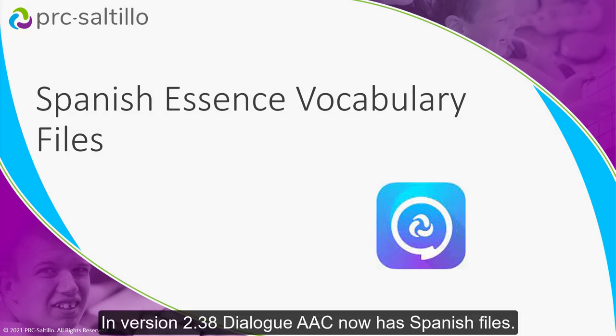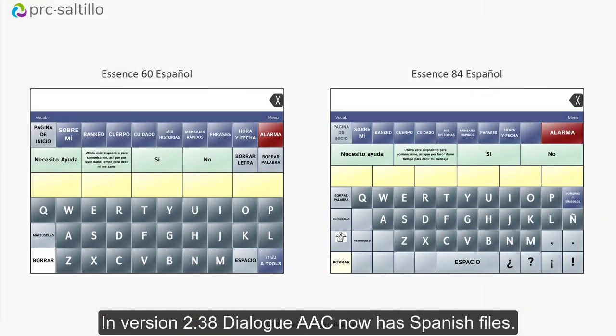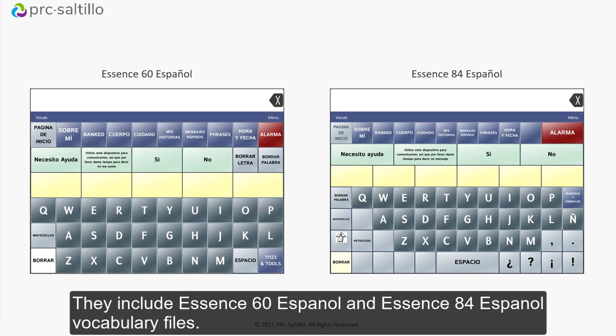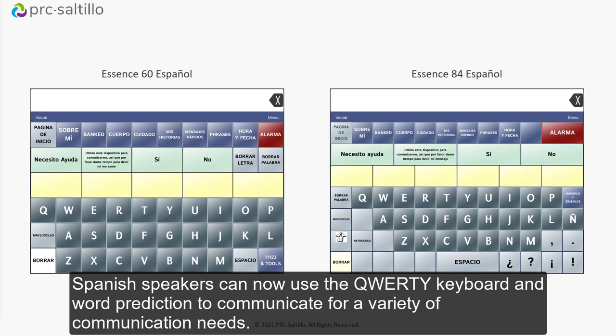In version 2.38, Dialog AAC now has Spanish files. The same great text-based Essence vocabulary files are now available in Spanish. They include Essence 60 Español and Essence 84 Español vocabulary files. Spanish speakers can now use the QWERTY keyboard and word prediction to communicate for a variety of communication needs.